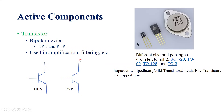Let us focus our attention on one of the active components — the transistor. There are different types of transistors with different sizes and packages: very small, medium size, and large. The large one is called a power transistor. Different package names are SOT, TO92, TO126, and TO3.